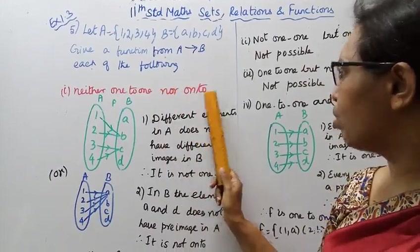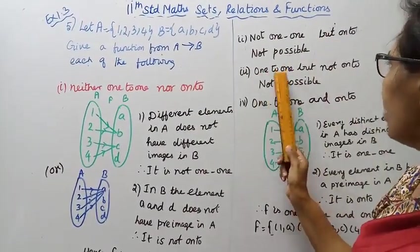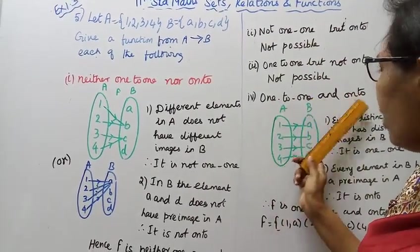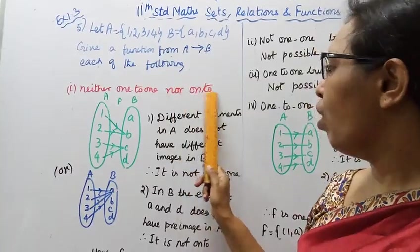Neither 1-to-1 nor onto. Not 1-to-1 but onto. 1-to-1 but not onto. 1-to-1 and onto.